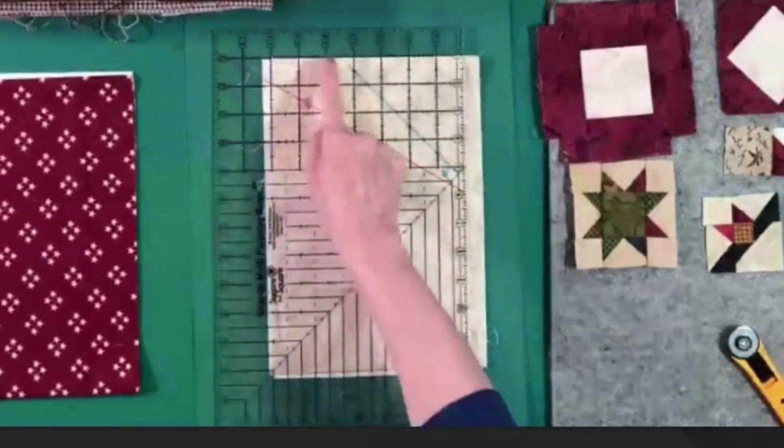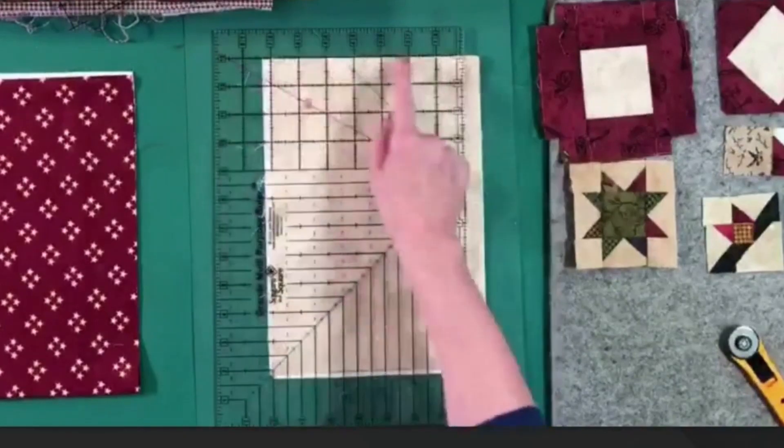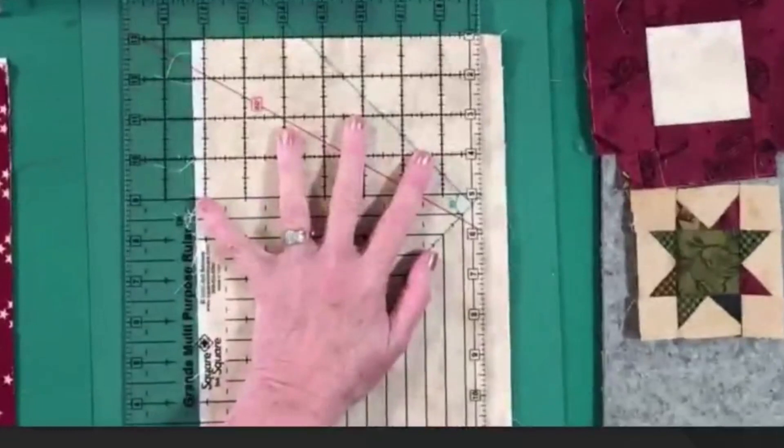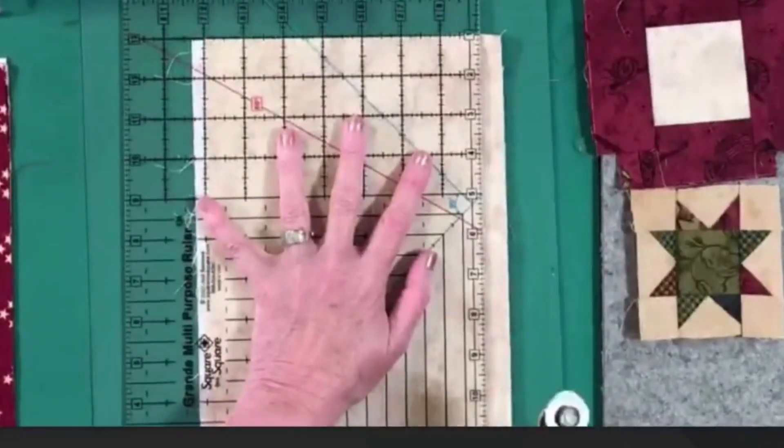And then I have a line right here on the ruler that is going right along that folded edge. My hand is flat. It is not like a spider. Cut with your hand flat. I use a small rotary cutter. I'm only using four layers of fabric. I don't need the big one.